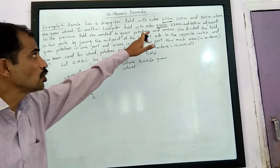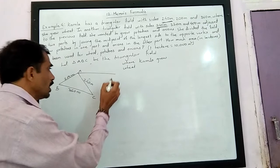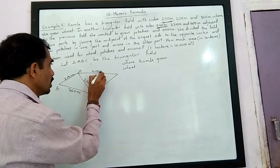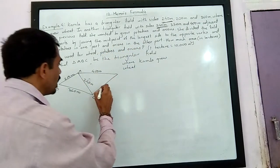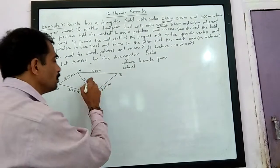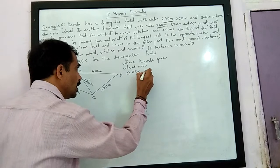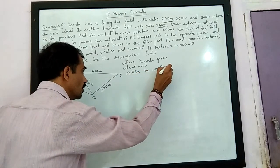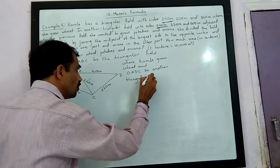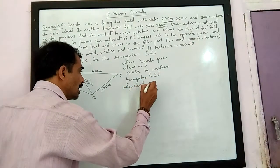In another triangular field with sides 240m, 320m and 400m adjacent to the previous field. Another field is adjacent to it. One side is 400m and the other side is 320m. Let ADC be another triangular field adjacent to the previous field.